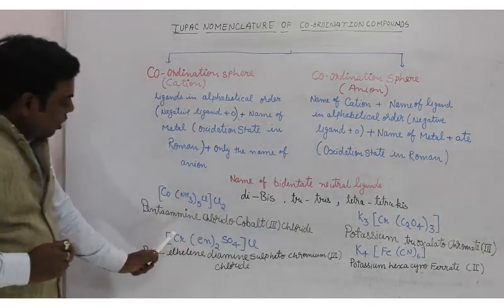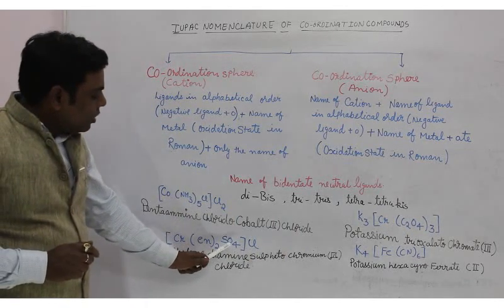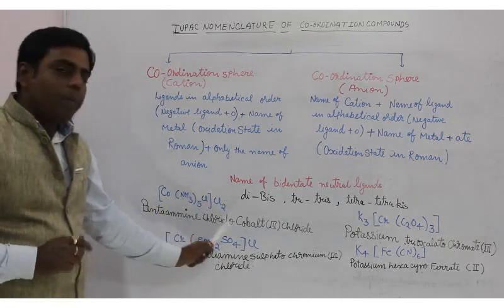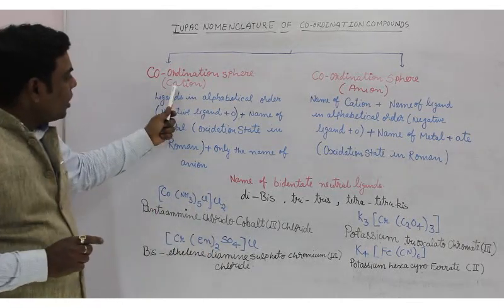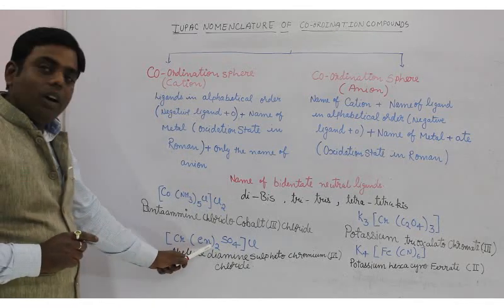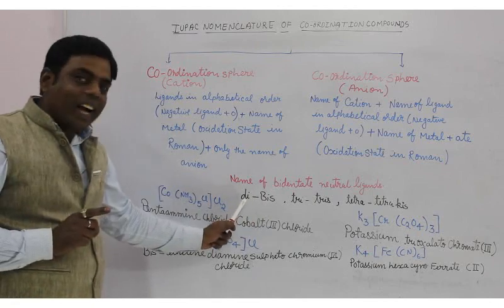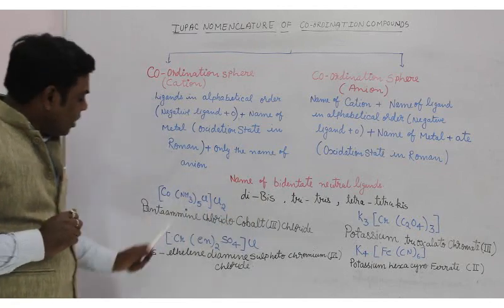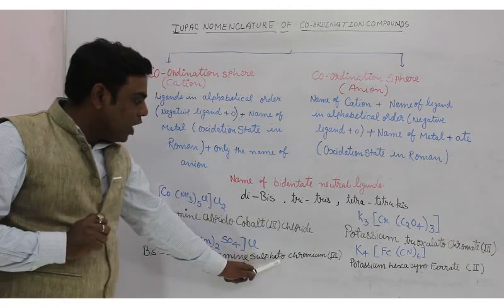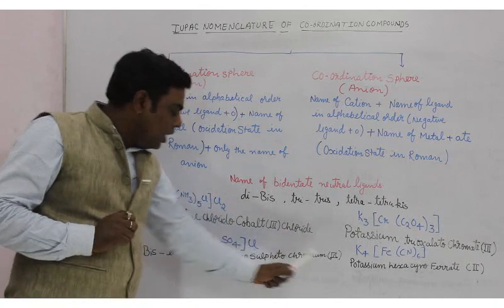Now the next example: [Cr(en)2]SO4Cl. Here the coordination sphere is the cation. Ethylenediamine is a neutral bidentate ligand and there are 2 of them, so we write 'bis'. The name becomes bis(ethylenediamine), then sulfato, then chromium. The oxidation state is +3, so we write chromium(III), then chloride.